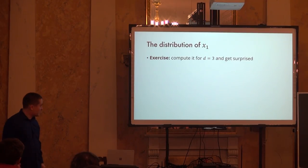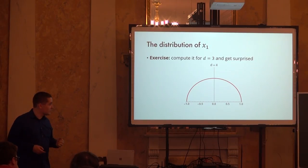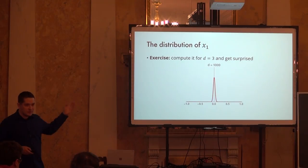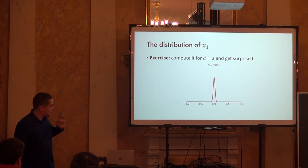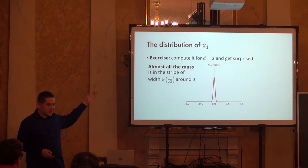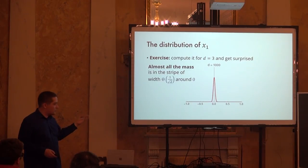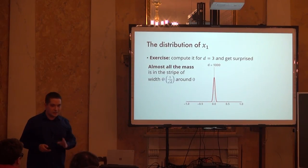Starting from D equals 4, as we increase the dimension the distribution of the first coordinate of a random point on the sphere becomes more and more concentrated. By 1,000 dimensions, the distribution is extremely sharply concentrated around zero. The width of this window is around 1 over square root D. So 99% of points on the sphere have first coordinate between roughly minus 10/√D and 10/√D. This shows that typical two vectors on the sphere are nearly orthogonal, and near-orthogonality means their distance is around √2.